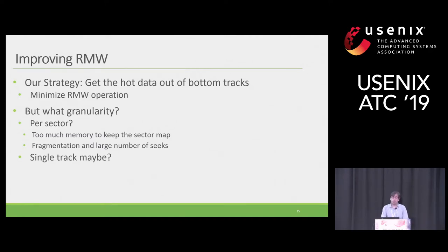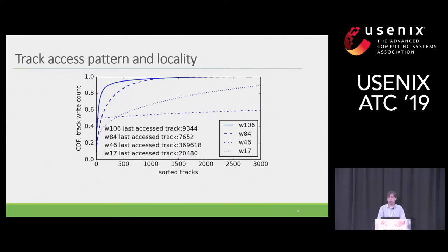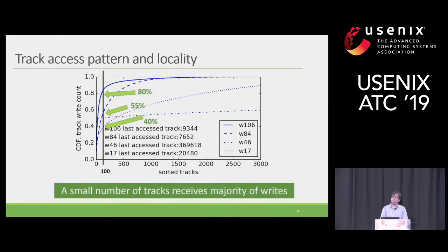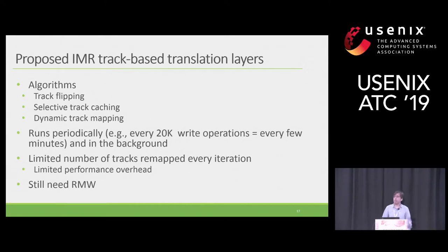What about doing it at track level? Our analysis on block traces supports this idea. The CDF of write accesses to tracks for different workloads shows that the majority of writes go to a small number of tracks. For example, the first 100 hot tracks for workload W106 receive about 80% of the writes. Motivated by that, we propose three translation layers: track flipping, track caching, and dynamic track mapping.